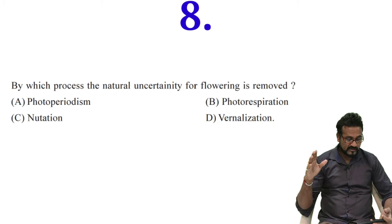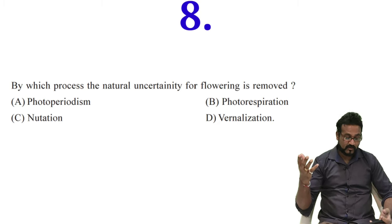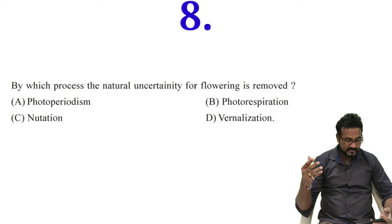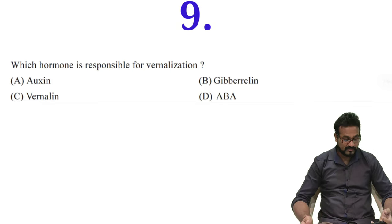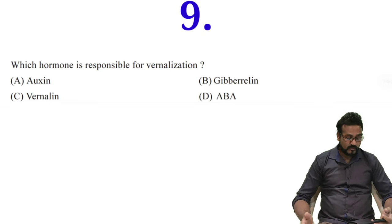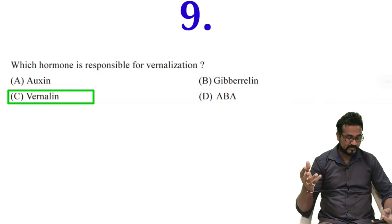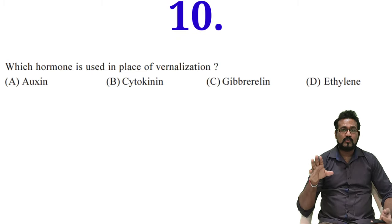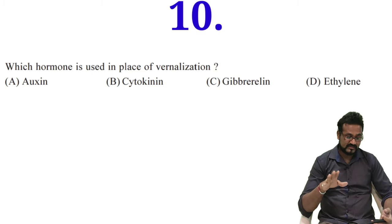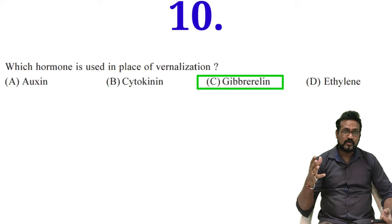Eighth question is by which process the natural uncertainty of flowering is removed? Photoperiodism, photorespiration, nutation, and vernalization. By vernalization you can induce flowering. Which hormone is responsible for vernalization? Option C, vernaline hormone is responsible for vernalization. It is a conceptual hormone. Which hormone is used in place of vernalization treatment? To replace vernalization you have to apply option C, gibberellin hormone to induce flowering in your plant.